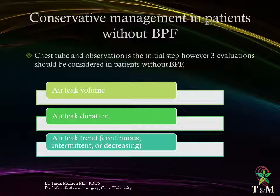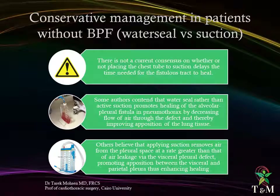Conservative management: Chest tube and observation is the initial step. However, three evaluations should be considered in all patients — air leak volume (which calls for grading and quantification), air leak duration, and air leak trend (whether the leak is continuous, intermittent, or decreasing in day-to-day assessments). Regarding water seal versus suction, there is no current consensus on whether placing the chest tube to suction delays the time needed for the fistula tract to heal. Some authors contend that water seal rather than active suction promotes healing of the alveolar pleural fistula by decreasing flow of air through the defect, improving apposition of lung tissue. Others believe that applying suction removes air from the pleural space at a rate greater than that of air leakage via the visceral pleural defect, promoting apposition between the visceral and parietal pleura, thus enhancing healing.